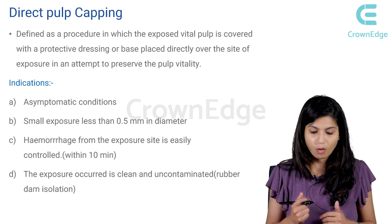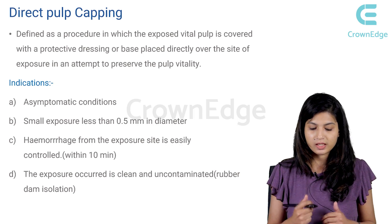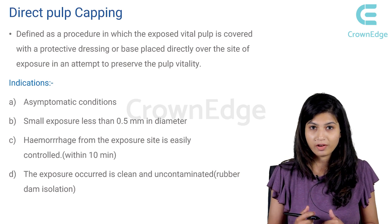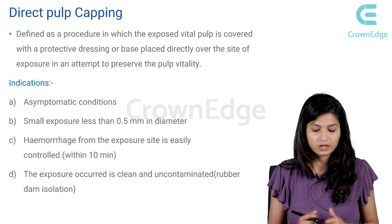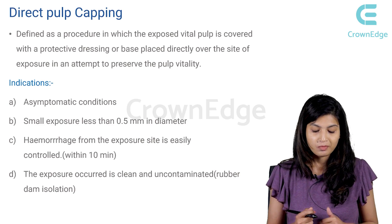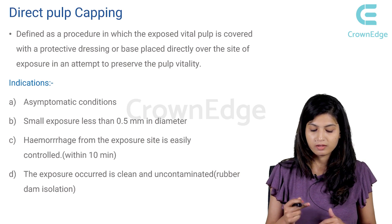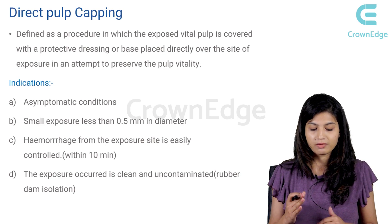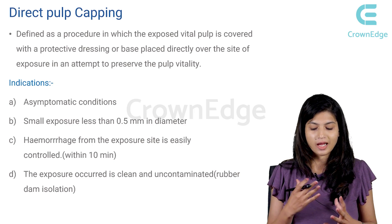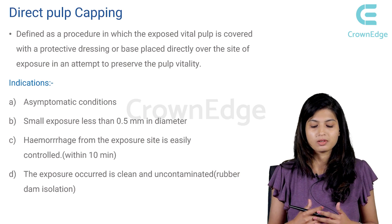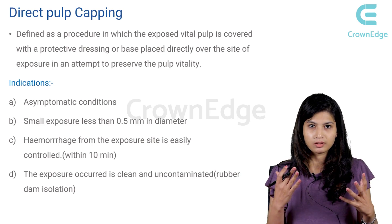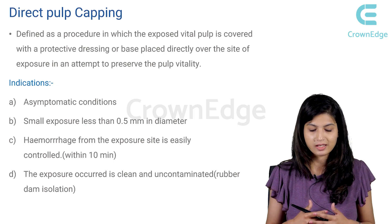The indications of direct pulp capping: First, asymptomatic conditions. Second, small exposures less than 0.5 millimeters in diameter. Third, hemorrhage from the exposure site is easily controlled within 10 minutes. Fourth, the exposure occurred in a clean and uncontaminated area with rubber dam isolation. This is a very strict protocol because if the site is contaminated, the direct pulp capping procedure will not be successful.